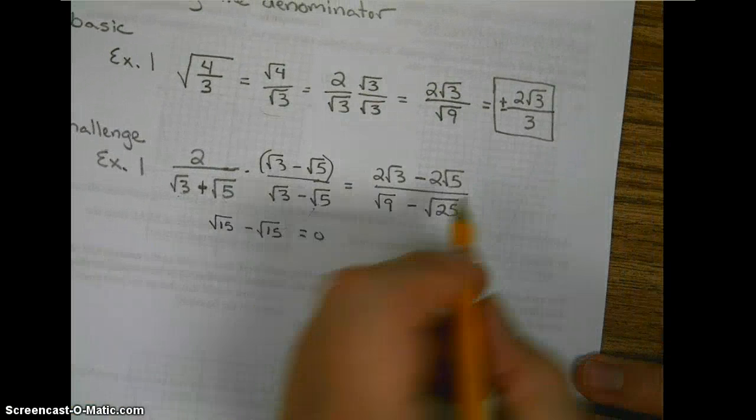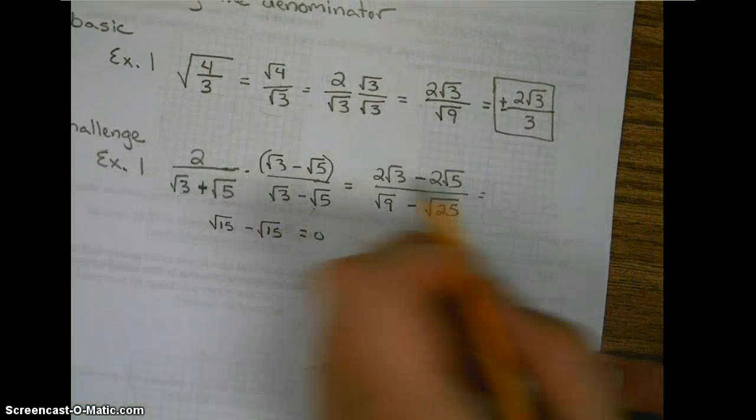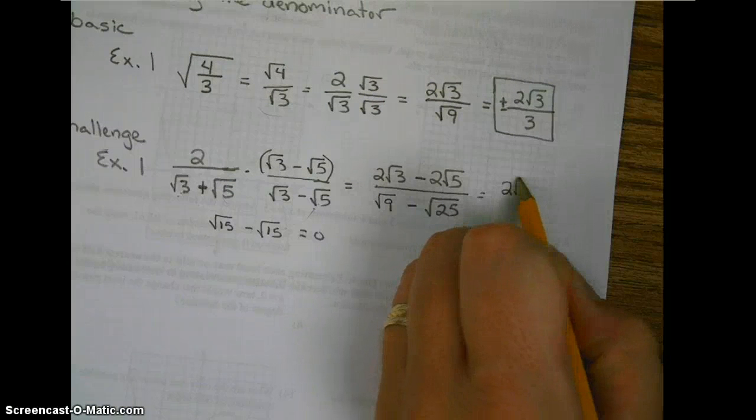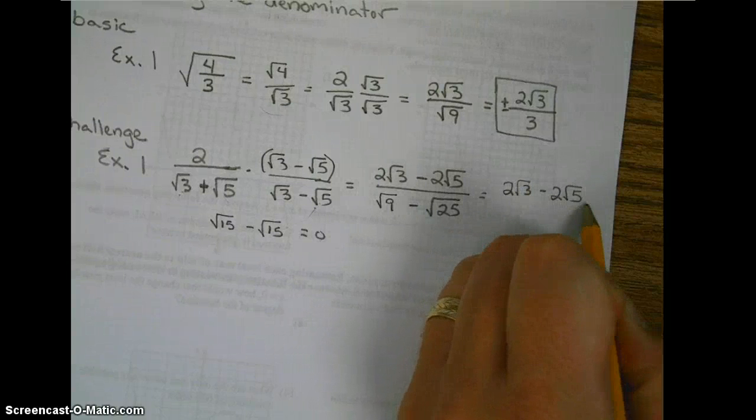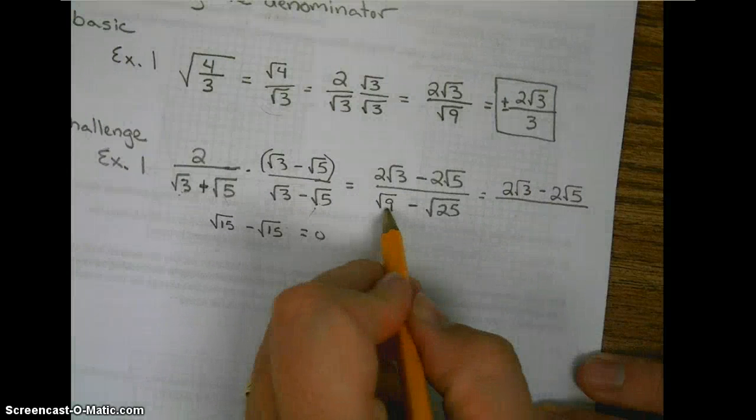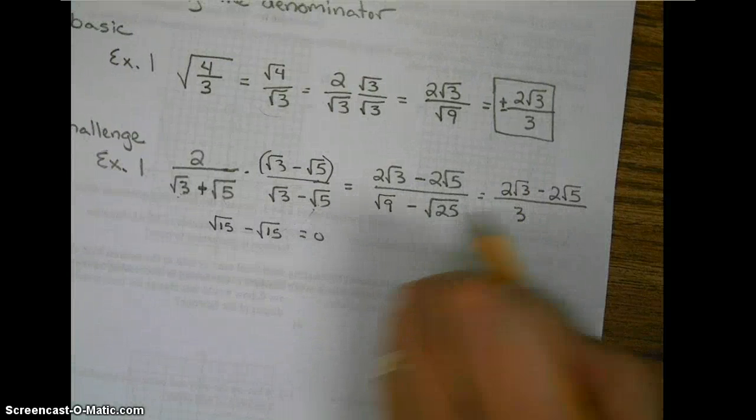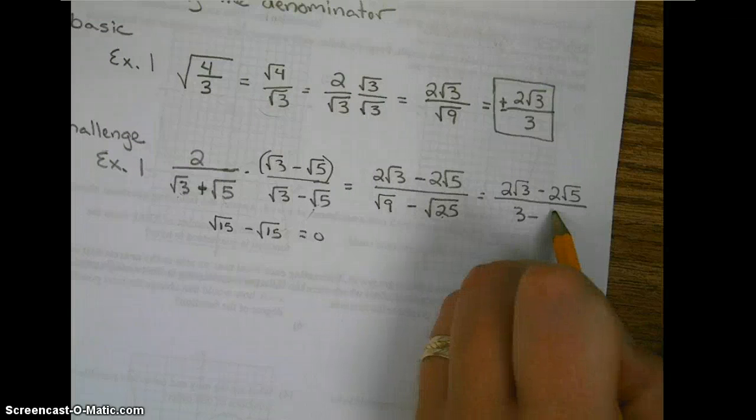Simplifying our radicals, we get 2 square roots of 3 minus 2 square roots of 5 over the square root of 9 is 3. The square root of 25 is 5.